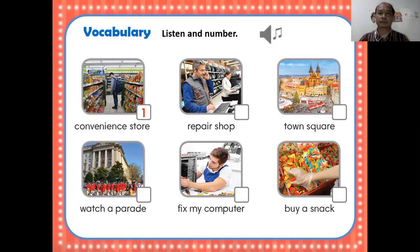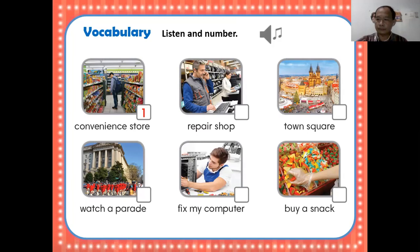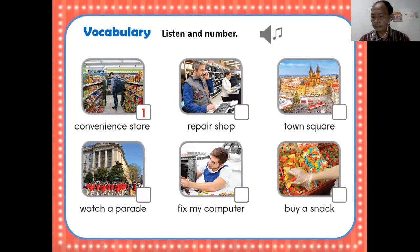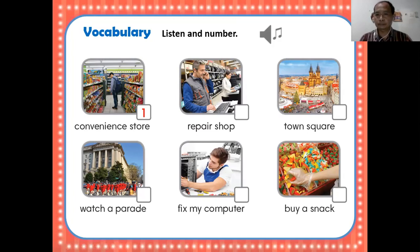Unit 1: Where is this place — listen and number. Number 1: convenience store. Number 2: buy a snack. Number 3: repair shop. Number 4: fix my computer. Number 5: town square. Number 6: watch a parade.